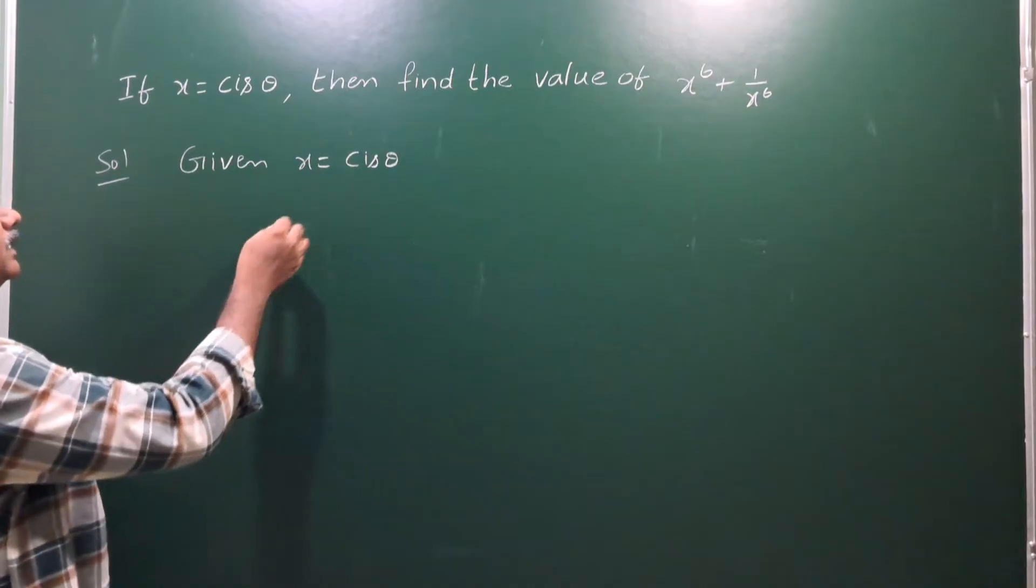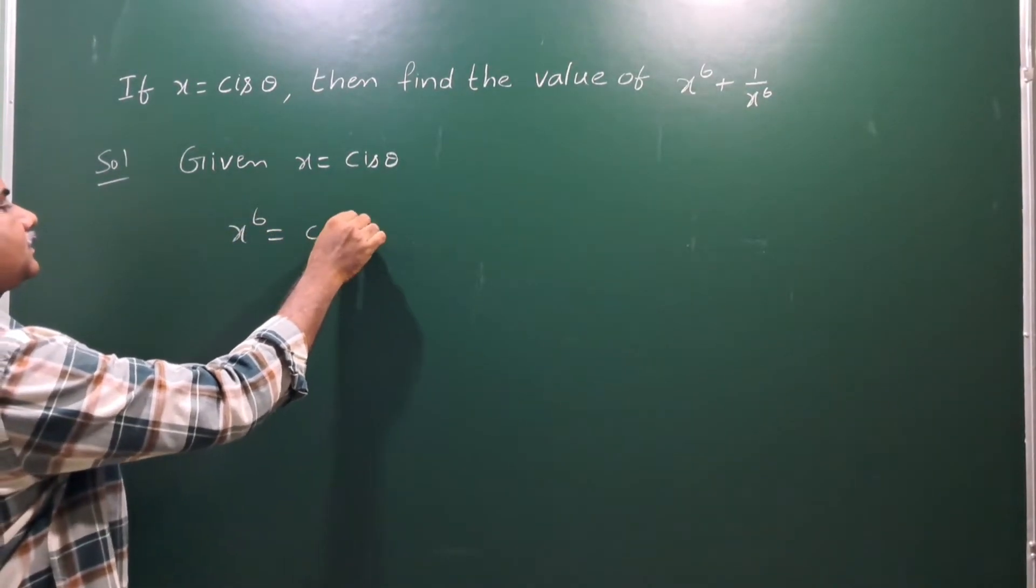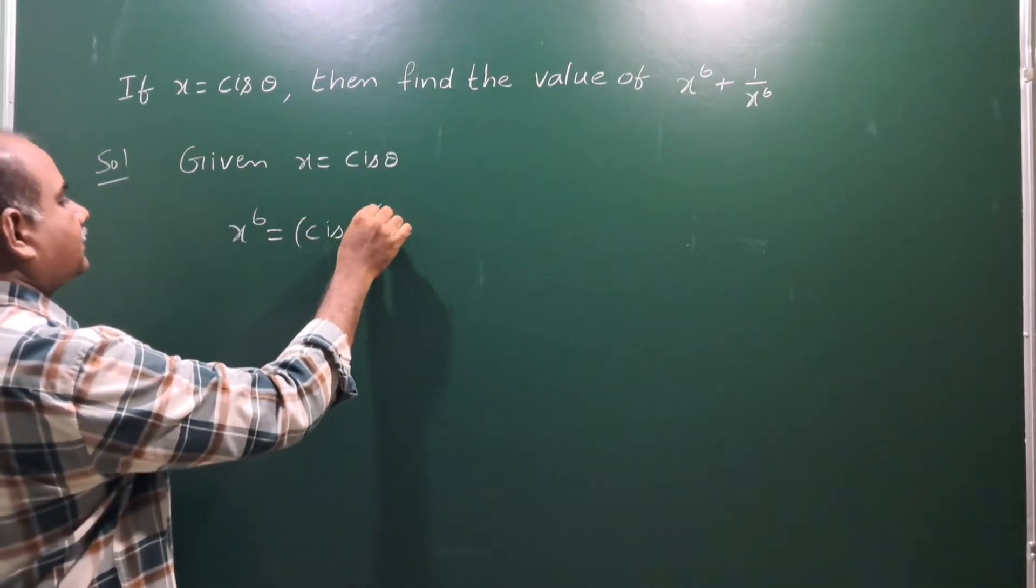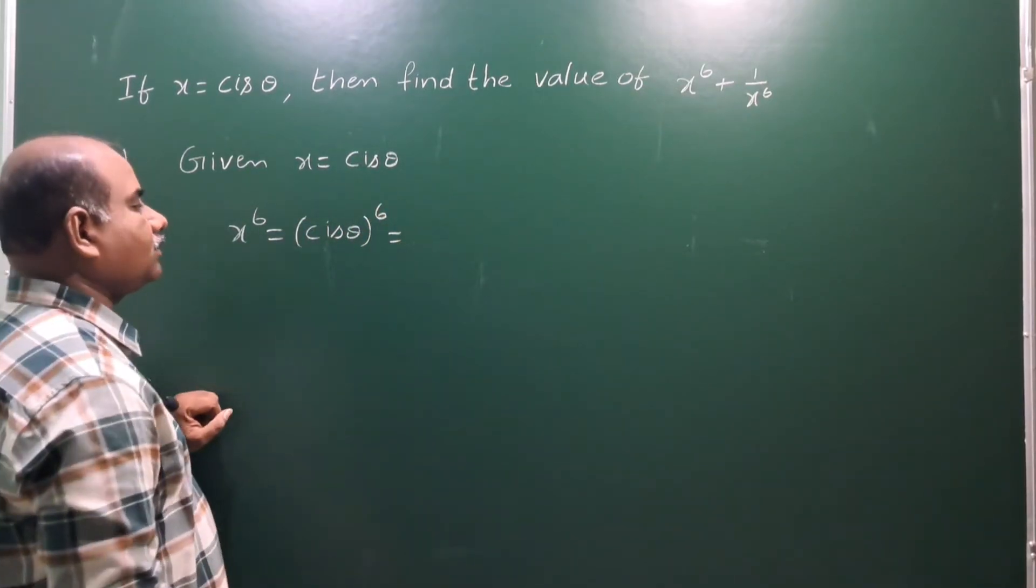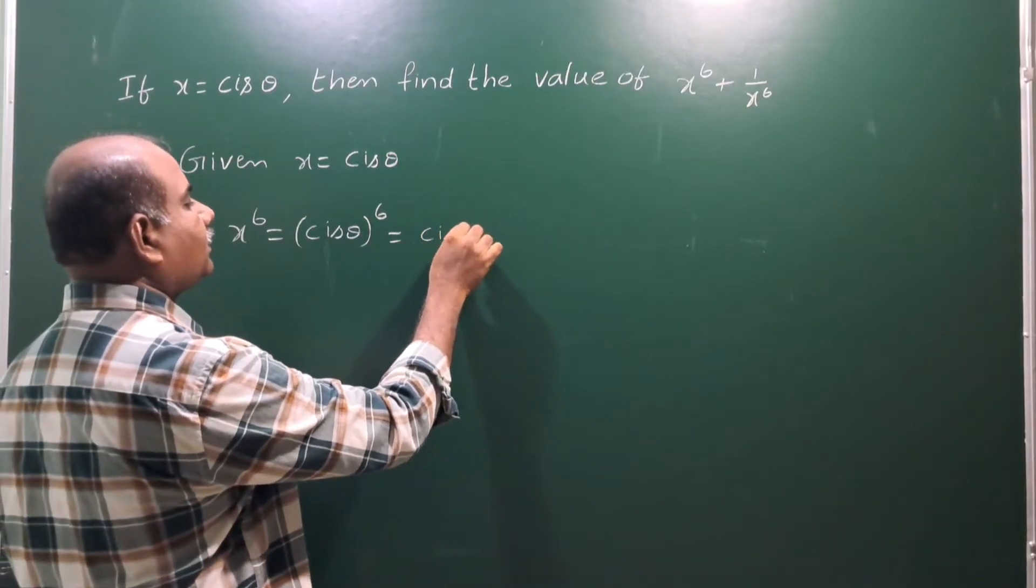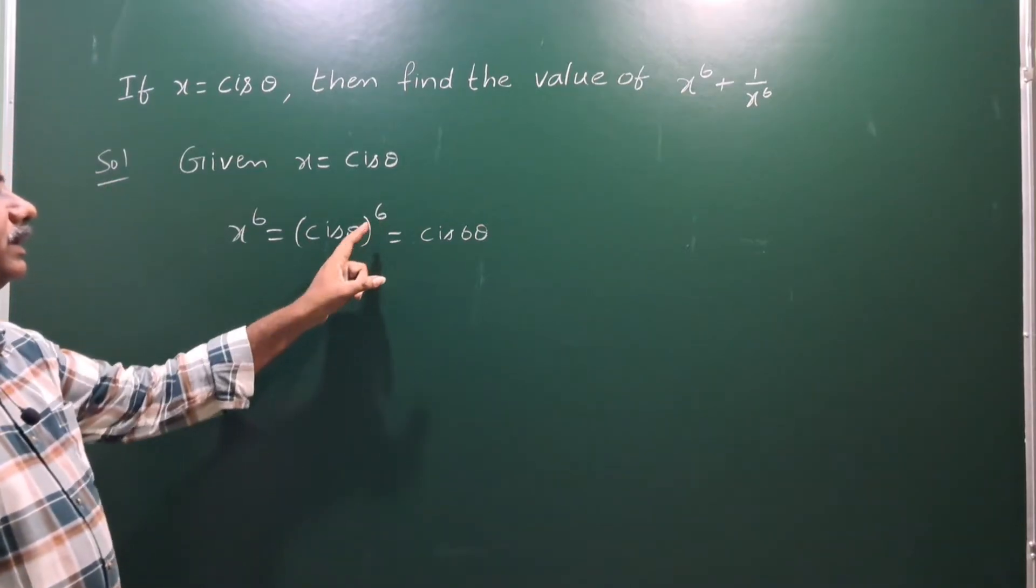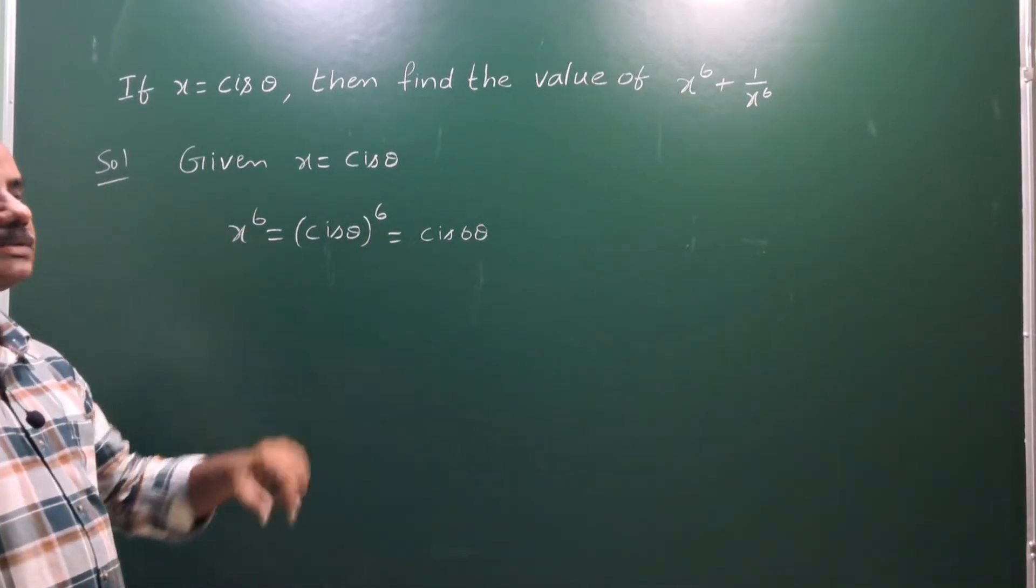So, first of all, given x is equal to cis theta, x power 6 means cis theta power 6. According to De Moivre's theorem, cis theta whole power n means cis n theta, that means cis 6 theta. So, this power of the angle means we multiply the angle, that is De Moivre's theorem.